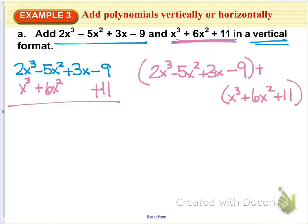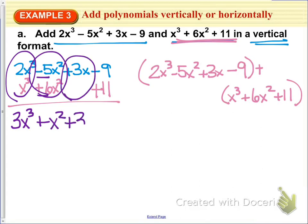Okay, so I'll just go ahead and do both since I've got them both written out here. I would just add these so I get 3x to the third. I would then add the coefficients here to get plus x squared. There's nothing to add to 3x, so it would just be plus 3x. And then negative 9 plus 11 would just be plus 2.